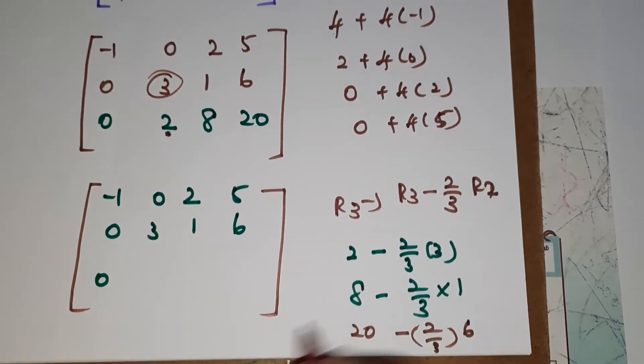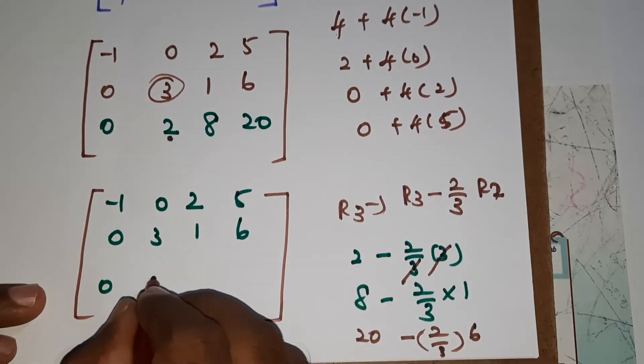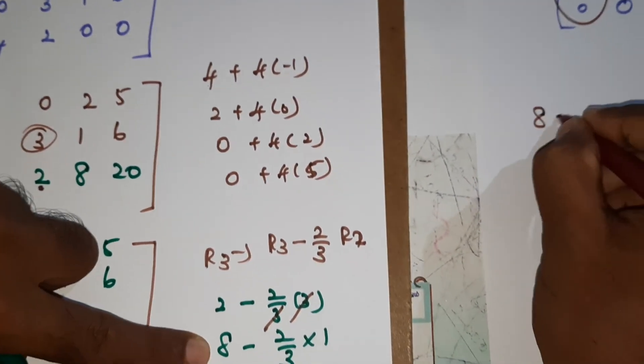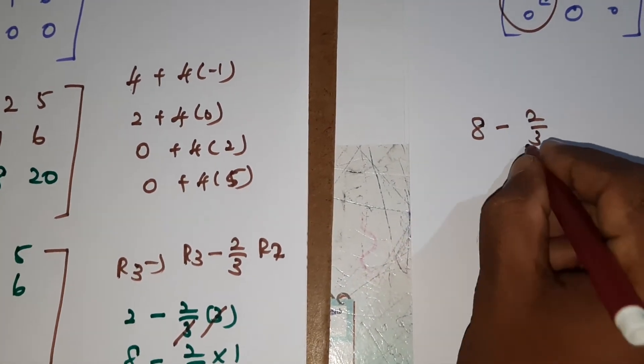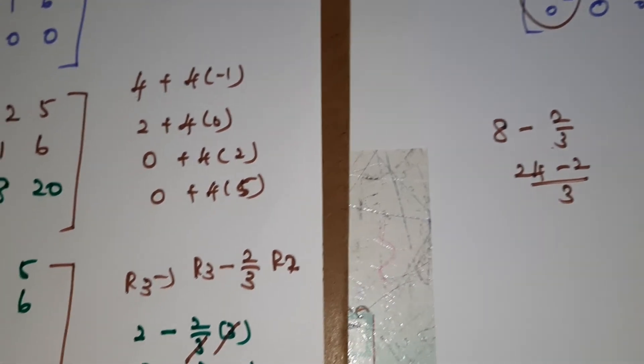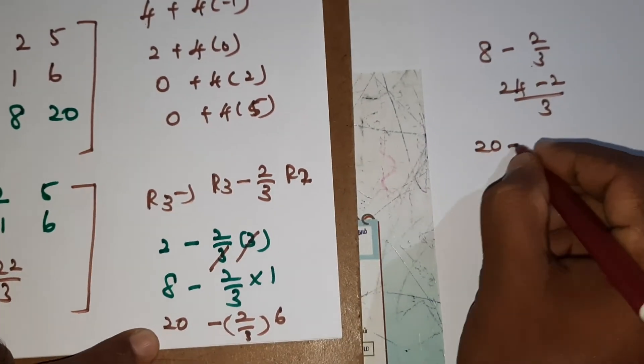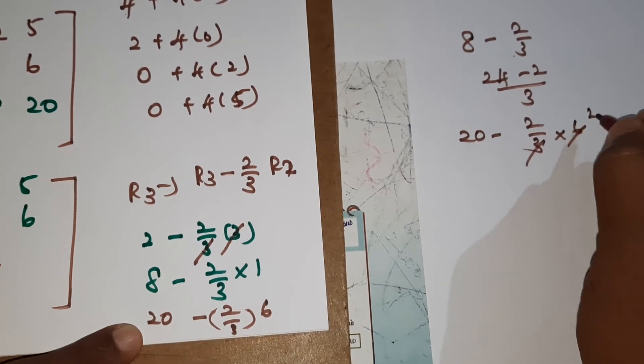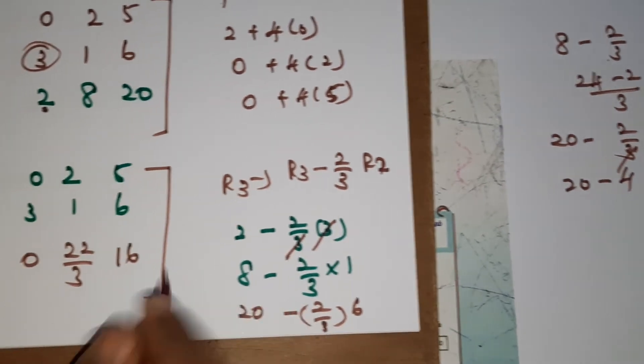The first element, definitely we can say 3, 3 cancel. So 2 minus 2 means value will be 0. Next, 8 minus 2 by 3 into 1 means 2 by 3 will come. Then cross multiply, 3 eights are 24 minus 2 divided by 3. Therefore answer will be 22 by 3. The last row, 20 minus 2 by 3 into 6, 3 and 6 cancel to 2 times. Then 20 minus 4 means value will be 16.